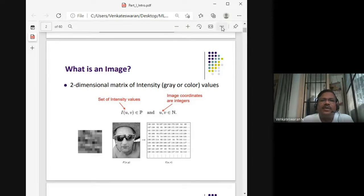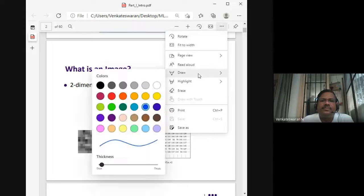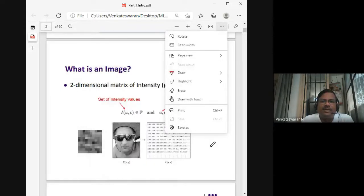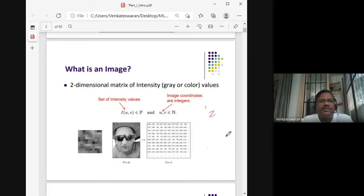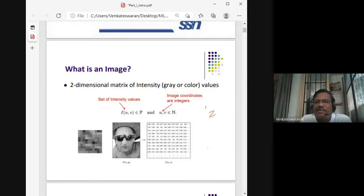Computers can only manipulate digital images. A digital image as input to any processing will be something like this - it's all numbers. You have to manipulate these numbers. I of u comma v, where u comma v represents the positions of the pixel. This is one position, there's another position.